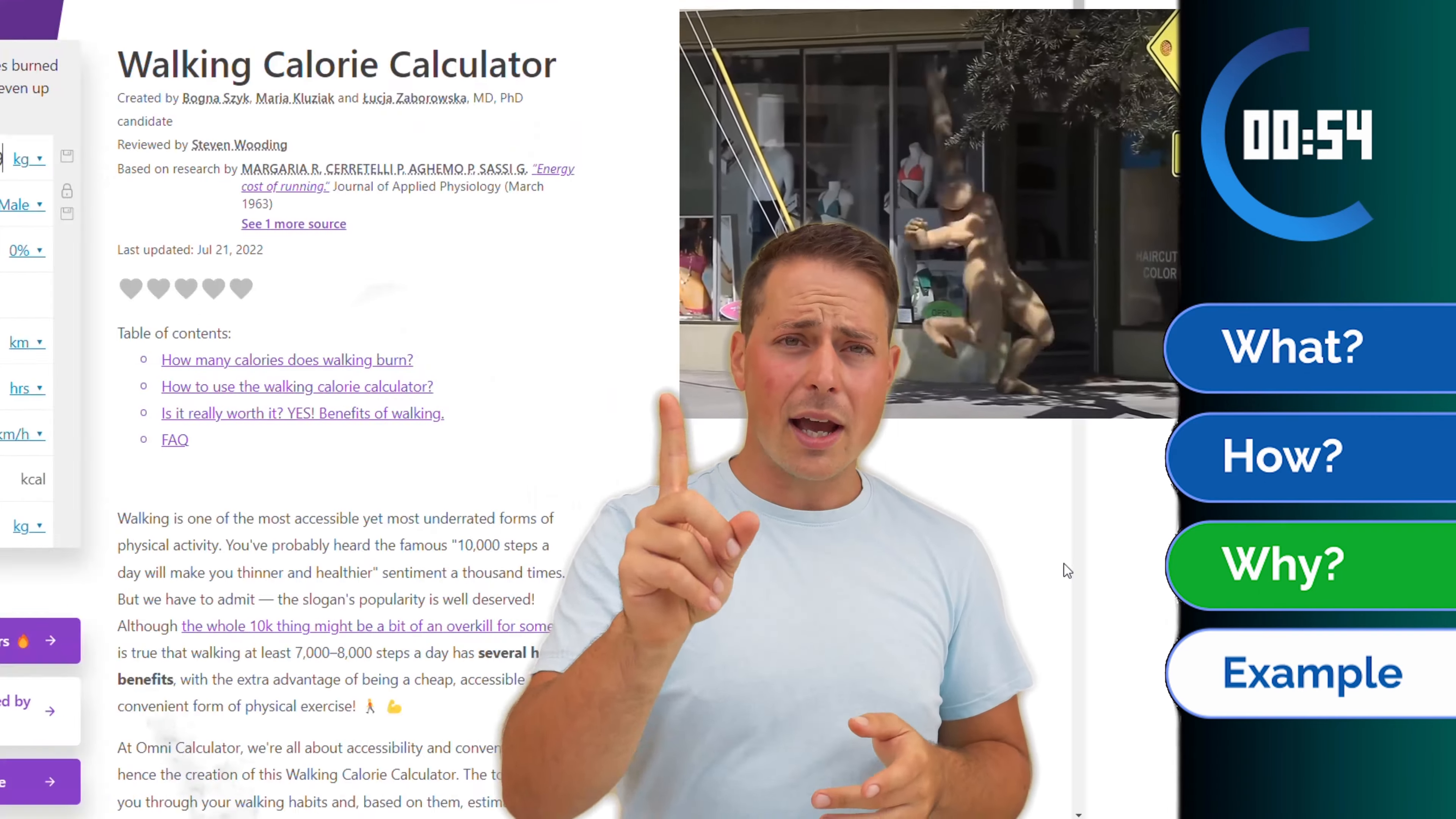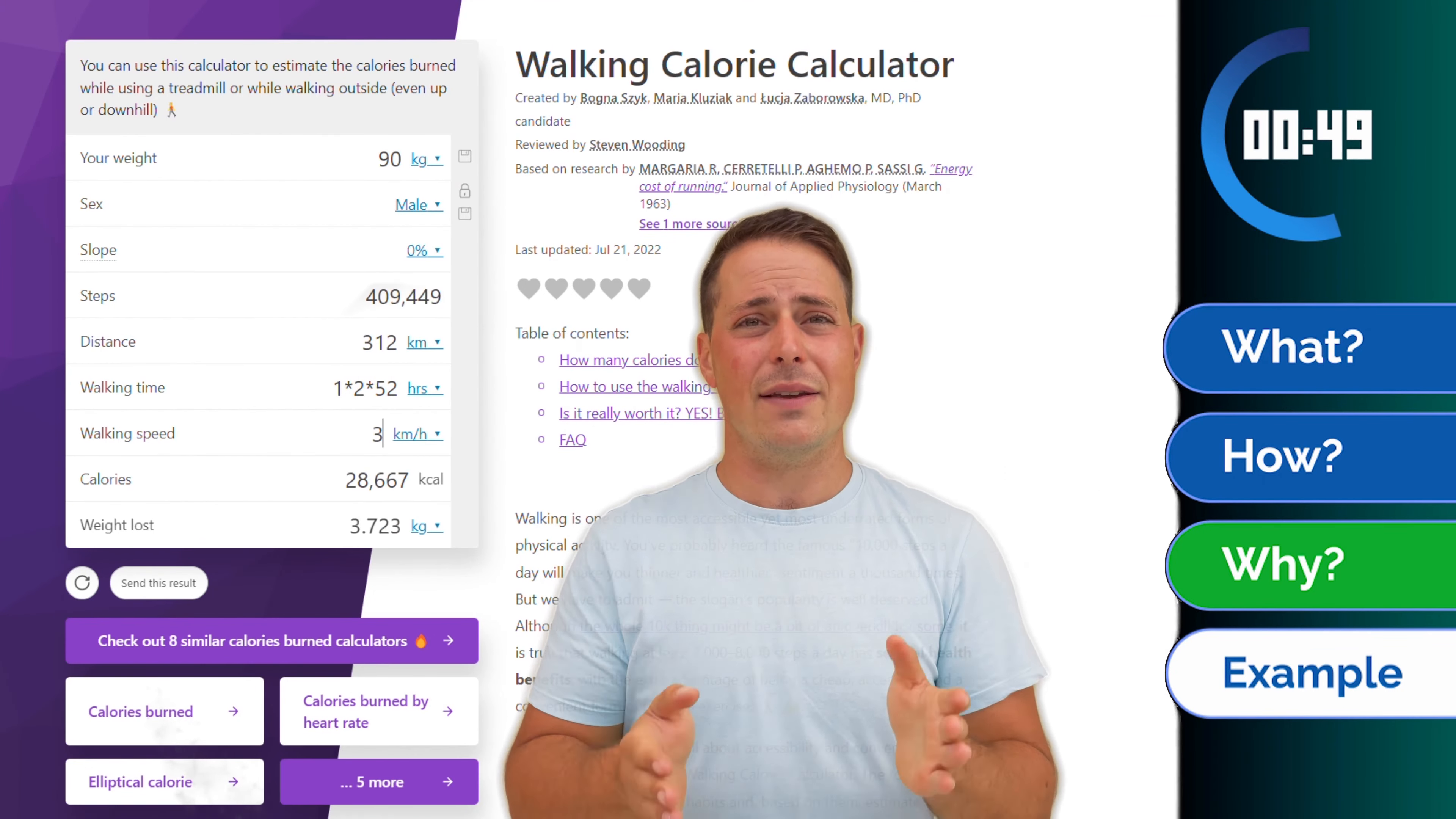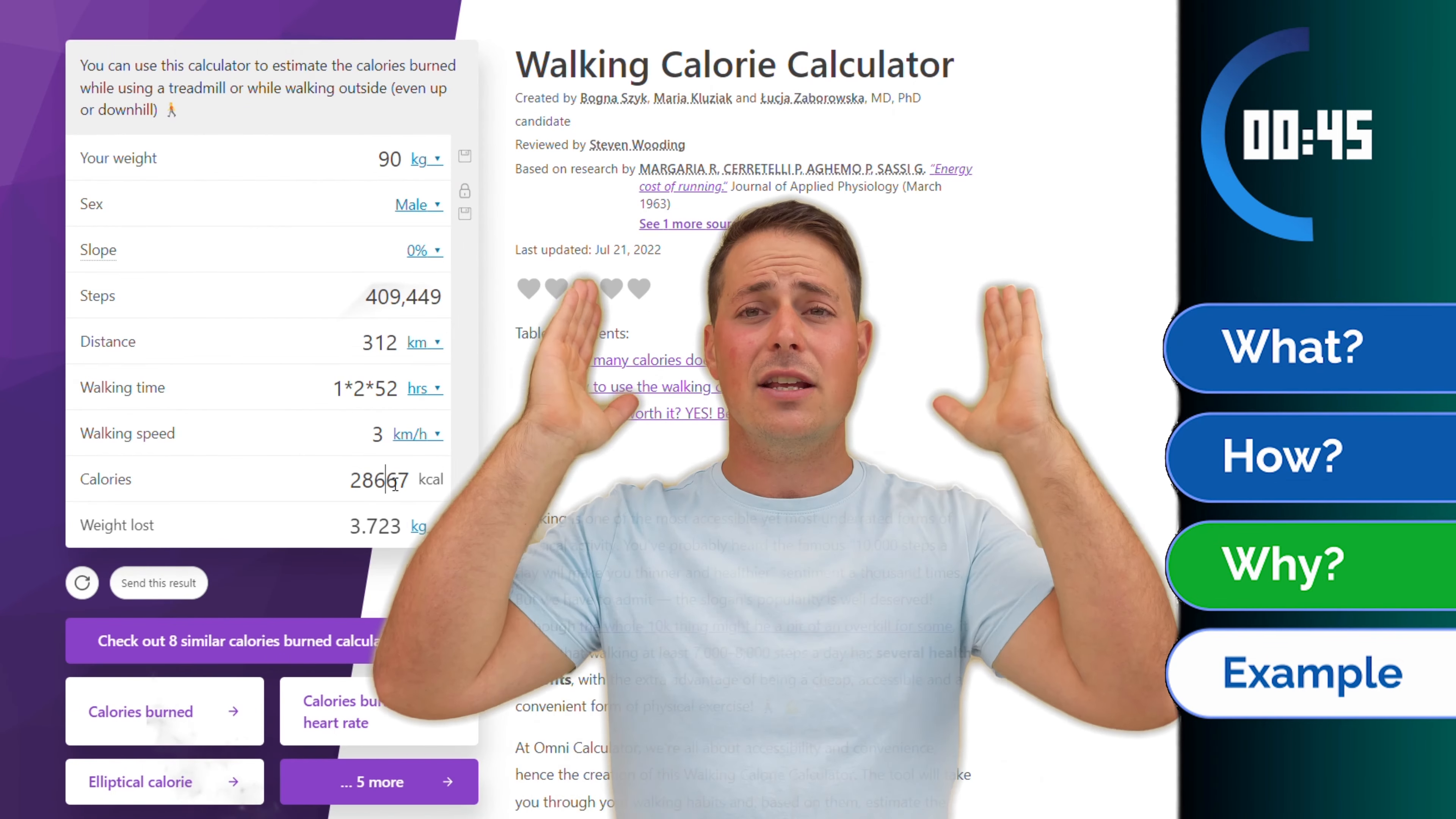However, if I walk one hour, twice a week, every week, for the whole year, I will be burning 28,000 calories. If I change nothing else in my life, that means I will lose eight pounds of weight just by walking.